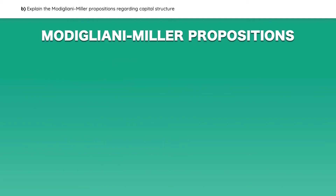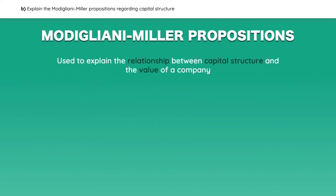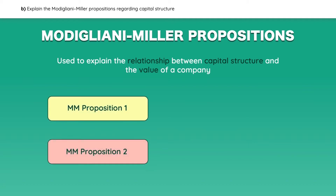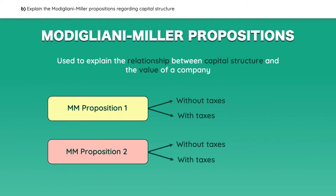The Modigliani-Miller propositions are used to explain the relationship between capital structure and the value of a company. We will look at propositions 1 and 2, first without taxes and then with taxes.